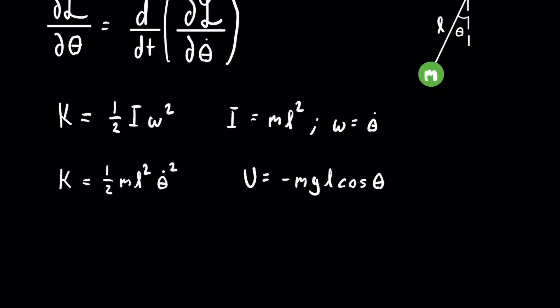We now have everything we need to write the Lagrangian. The Lagrangian will be equal to one half ml squared theta dot squared plus mgl cosine of theta.